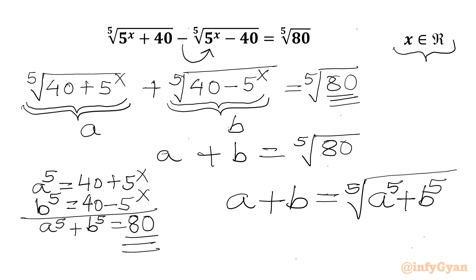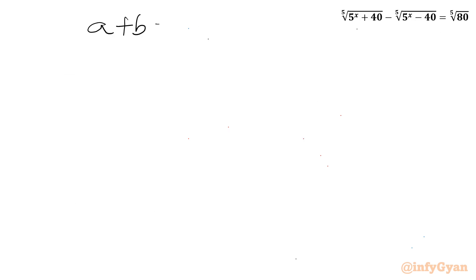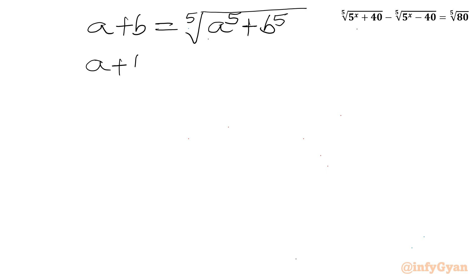Now I will raise both sides to the power 5. So with A plus B equal to 5th root of (A⁵ + B⁵), raising to the 5th power gives: (A + B)⁵ equals A⁵ plus B⁵.